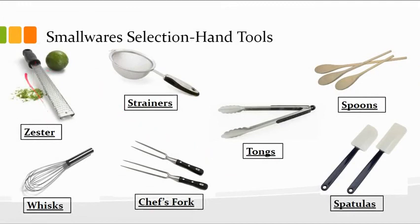Next is a zester, which is kind of like a gigantic nail file. You would take a citrus fruit — a lemon, lime, orange — and scrape the rind on the outside of it, and it creates this little zest that you can put in certain recipes. The great thing is it is a very light flavoring of whatever that citrus fruit is — not overpowering, but it has just enough of a hint that it can really change the flavor profile of your dish.